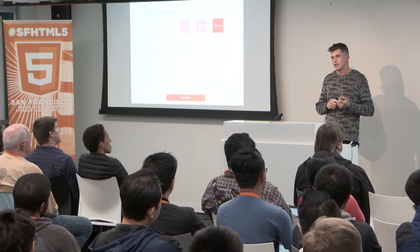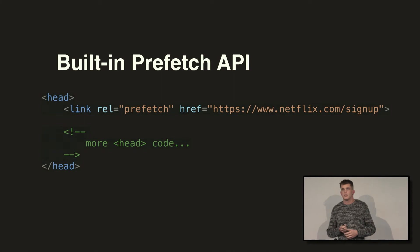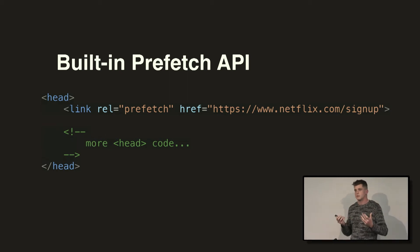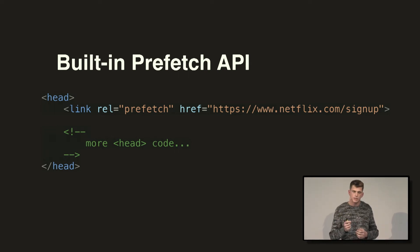I want to show you two things we did to pre-fetch. One, we used a built-in browser API, and then we came up with a neat technique that overcomes some of its trade-offs. The built-in implementation couldn't be simpler — it's just a link tag within the head. The href is just the URL of the resource you want to pre-fetch. In this case it's an HTML document for the sign-up app, but it could be any resource: JavaScript, CSS, an image — anything the browser can use.